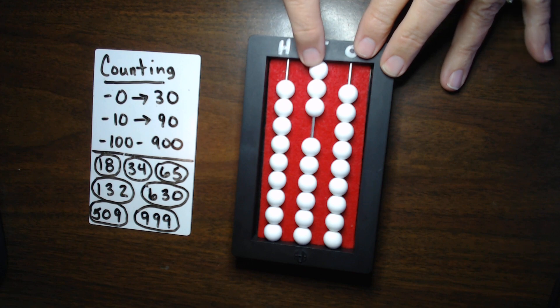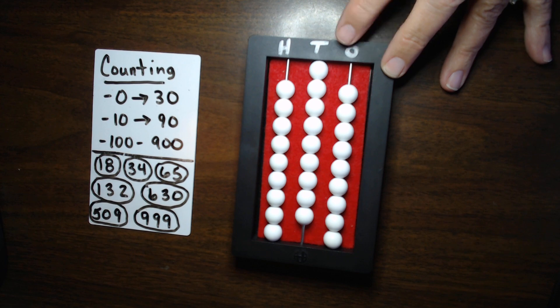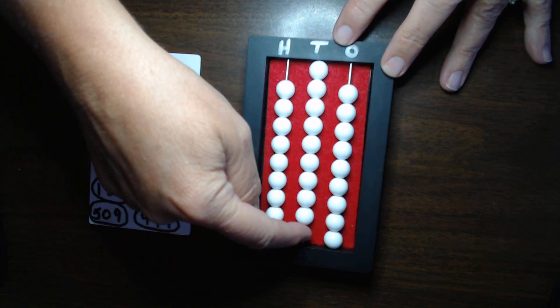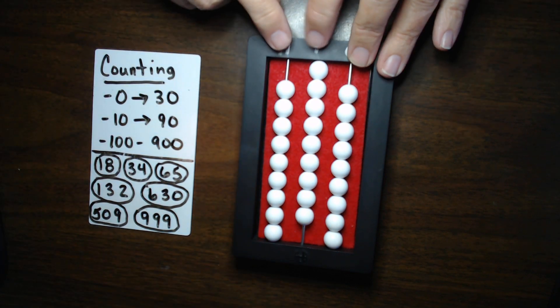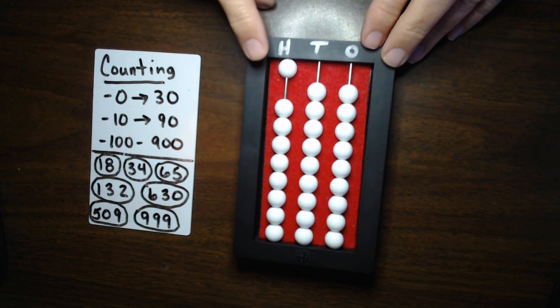So, we have 10, 20, 30, 40, 50, 60, 70, 80, 90. Now, same concept. I'm out of beads. I can't go to 100. So, I'm going to make this exchange here. I'm going to push the 100 up and clear the 10s column.